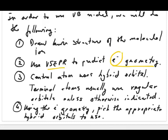Remember that you can have multiple central atoms. As a rule of thumb, central atoms tend to use hybrid orbitals for their bonding, while terminal atoms on the outside tend to use regular orbitals unless otherwise indicated. Once you identify which atoms use hybrid orbitals, you use the electron geometry from step 2 to determine the appropriate hybrid orbitals.